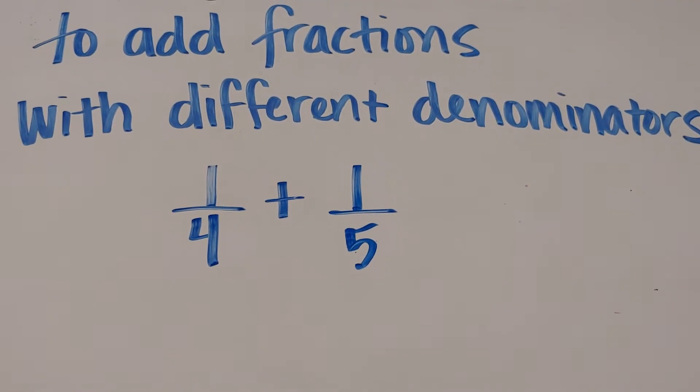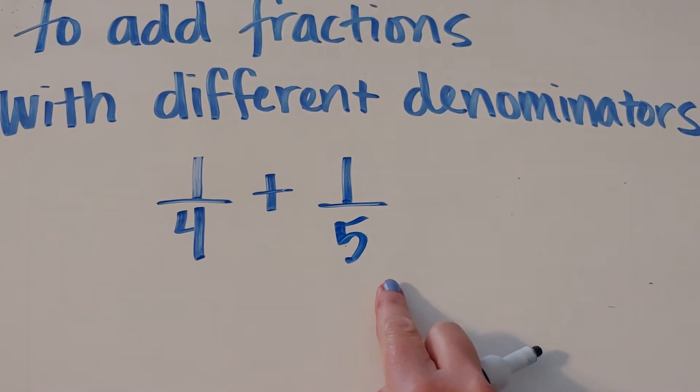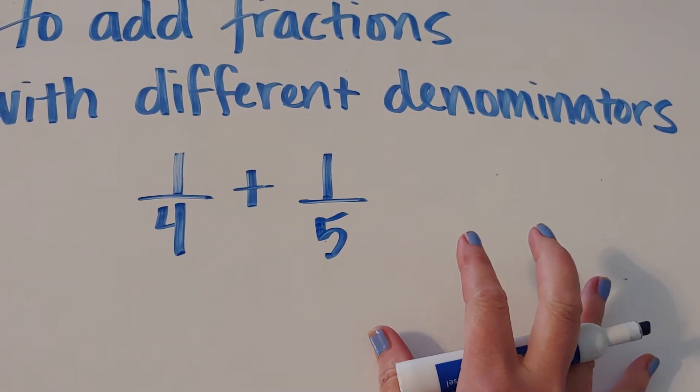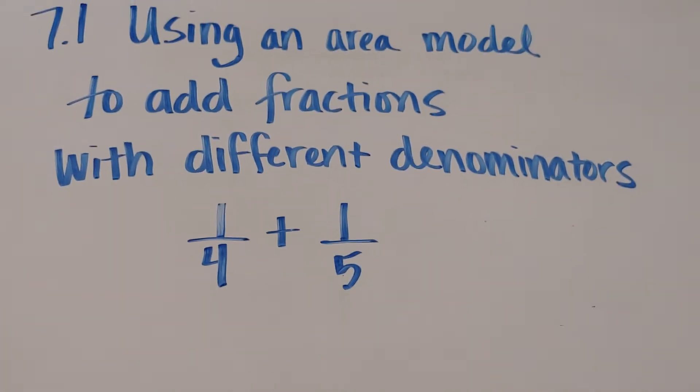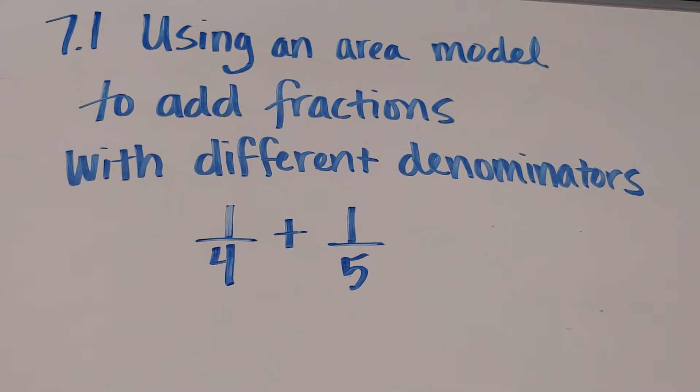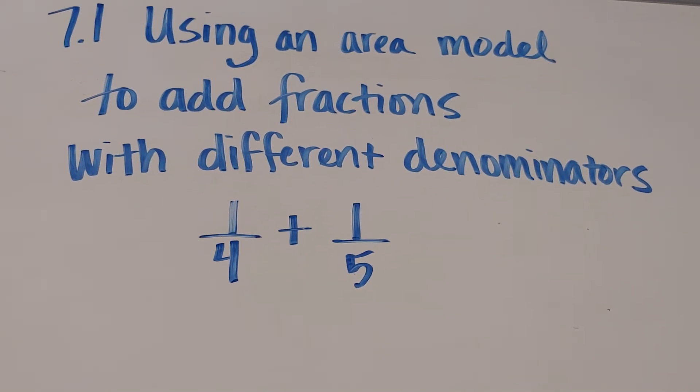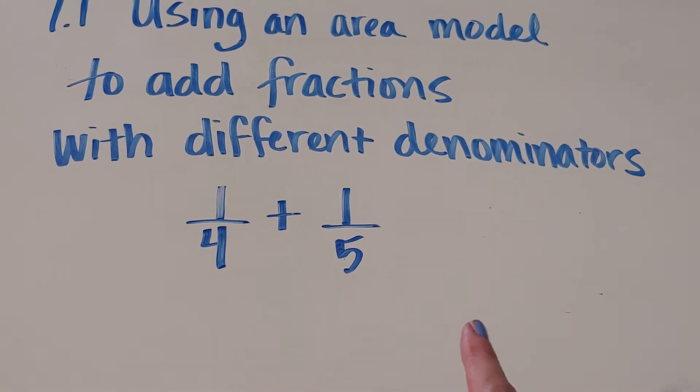Now usually we want to find a common denominator and there's a whole standard algorithm that we can do in order to get that answer. But what we want to do using common core is draw a picture that will show us how to add one-fourth plus one-fifth.